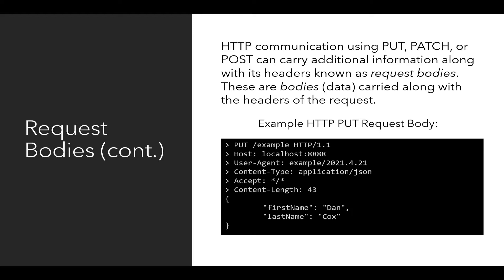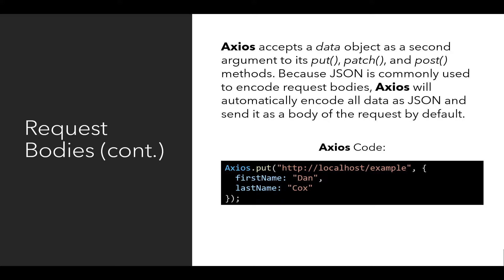So this is an example of a request body — additional data sent along with a request — corresponding with the headers already set as part of the P's: PUT, PATCH, and POST. From the client side within JavaScript, we can use a library called Axios, which will handle encoding the data we want as JavaScript Object Notation and sending it along with any requests we make. Axios accepts a data object as a second argument to its PUT, PATCH, and POST methods, and will automatically encode those values as JSON by default.